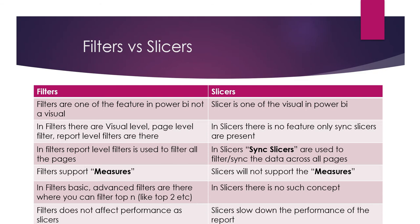The first difference is: filters are one of the features in Power BI and not a visual. Slicers are one of the visuals in the visualization section, like tables, matrix chart, pie chart, and donut chart. In filters, there are visual level, page level, and report level filters. In slicers, there is no such feature — only the slicer itself is present.